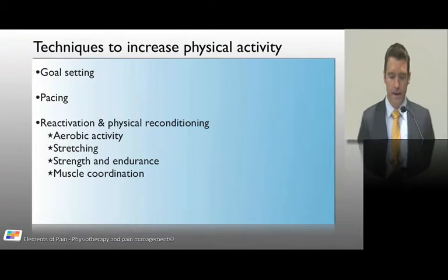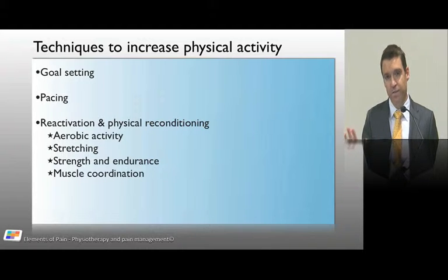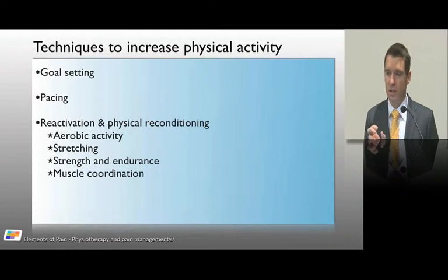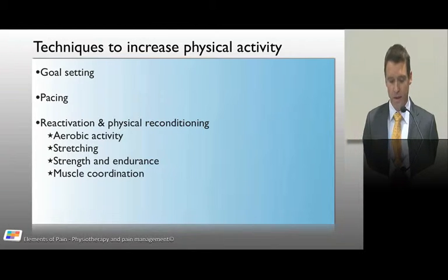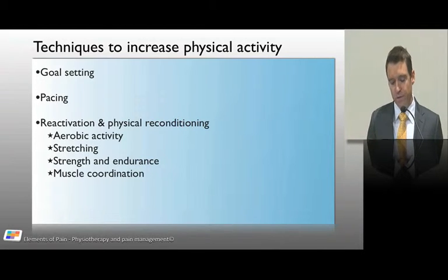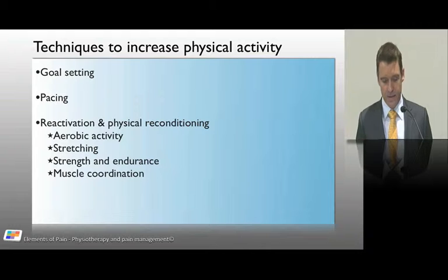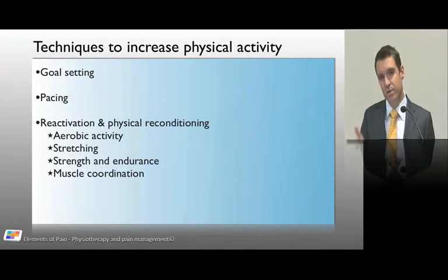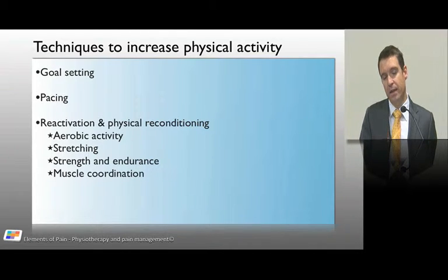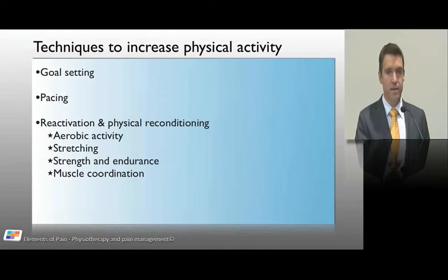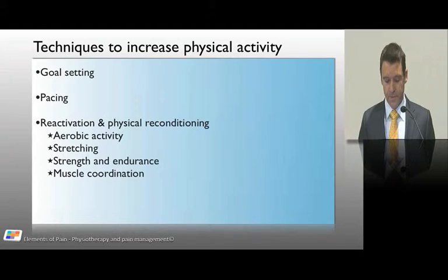How do we get patients moving more? You want to set goals — realistic goals that are specific and based on function, social goals, and work goals. The key is pacing activity — changing them from that downward spiral into an upward good spiral. To reactivate and recondition them, there are four main ways: increase their aerobic capacity, stretching, strength and endurance, and focusing on muscle coordination as well. Each technique is tailored to the patient following assessment and an individualized understanding of the patient.